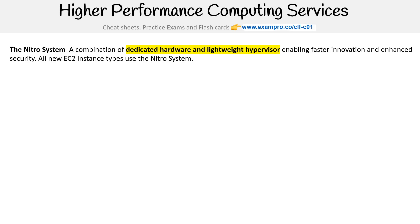So before we do, we got to talk about the Nitro system. This is a combination of dedicated hardware and lightweight hypervisor enabling faster innovation and enhanced security. All new EC2 instance types use the Nitro system, and the Nitro system is designed by AWS.